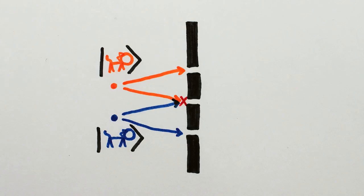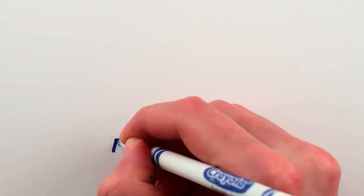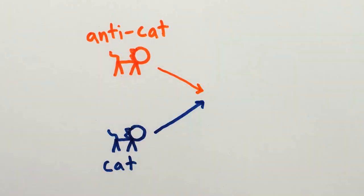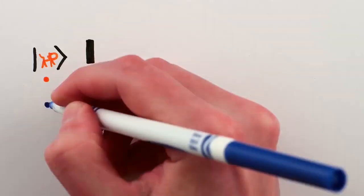Maybe the slit's too small for two cats to fit through simultaneously. Or maybe one cat is actually made of antimatter so if both go through the middle slit, they annihilate each other and never make it to the wall. Either way, the situation is now this.